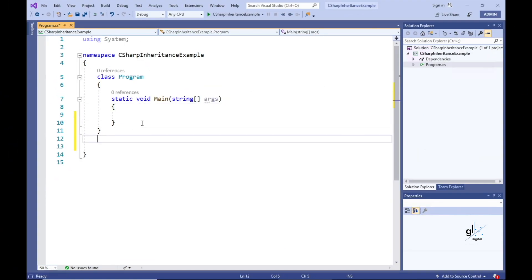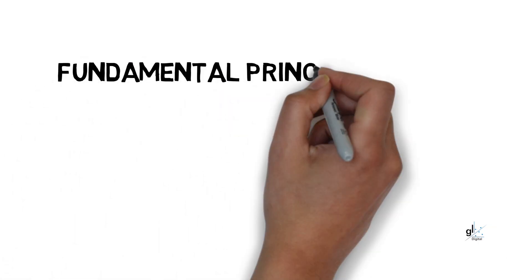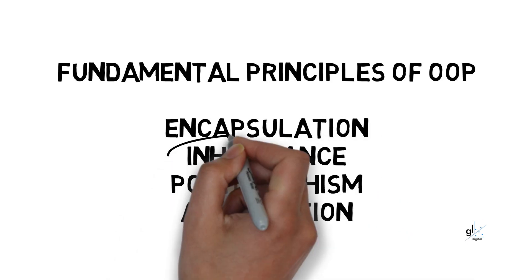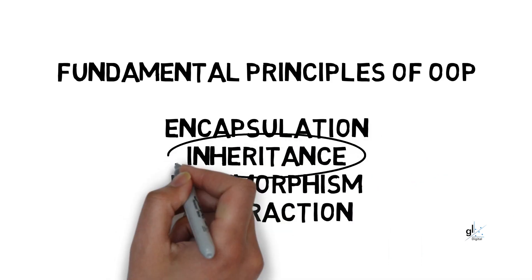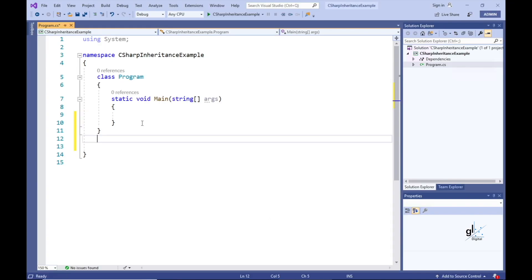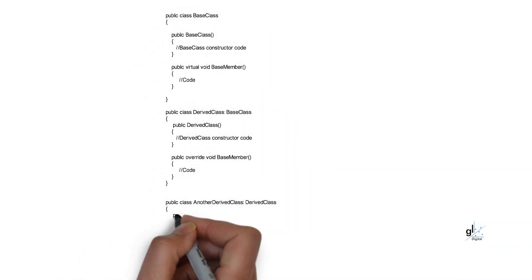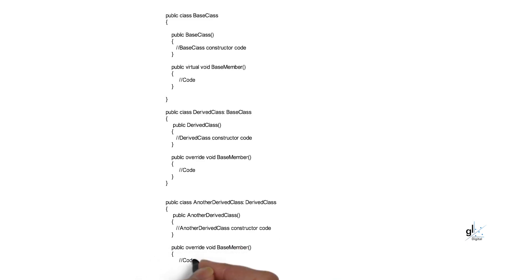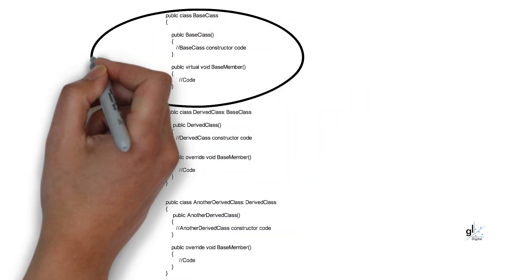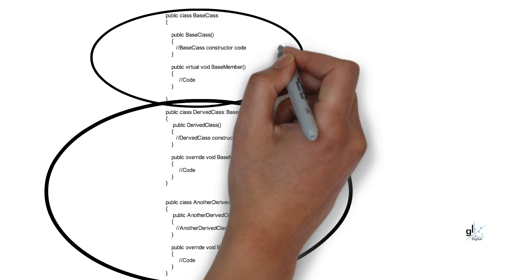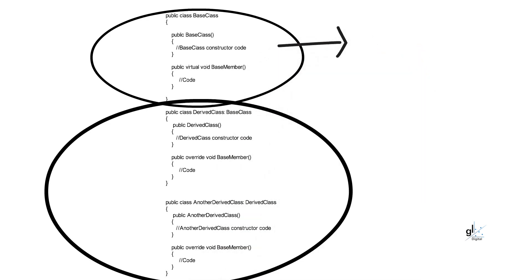So what is inheritance? Inheritance is one of the fundamental attributes of object-oriented programming. It allows the developer to design code where functionality in a base class can be reused by one or more derived classes through the implementation of inheritance. The class whose members are inherited is called the base class, and a class that inherits from the base class is called a derived class.